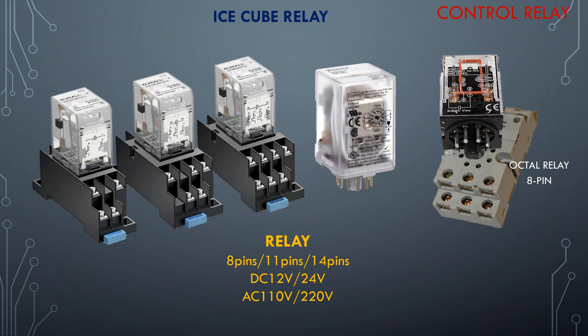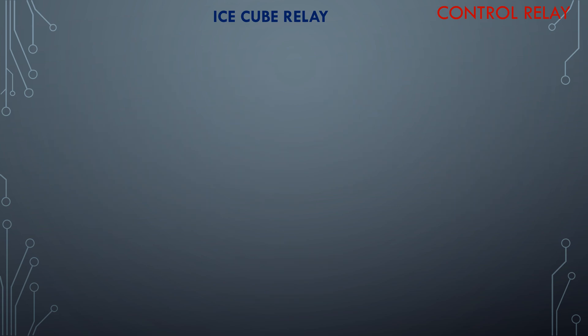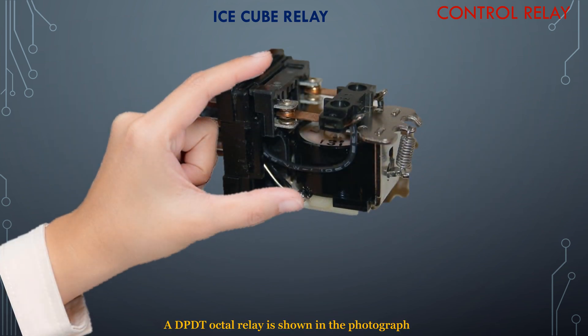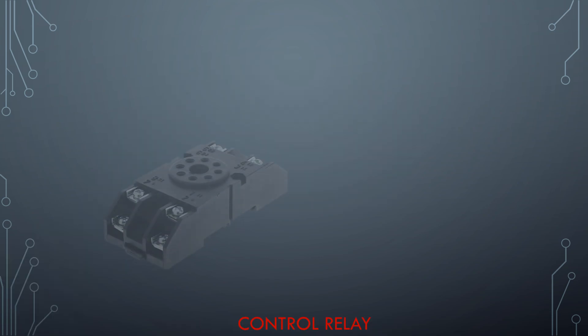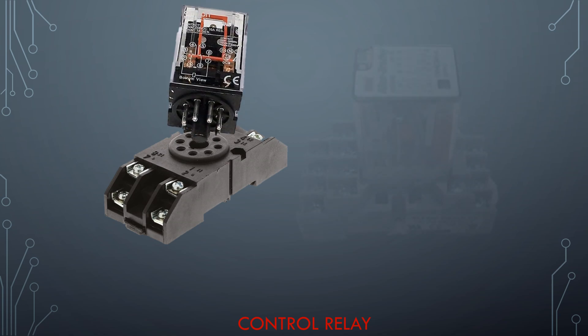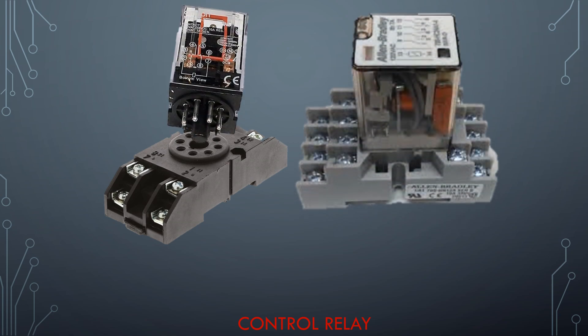Two common types of control relays are the so-called octal relay and the ice cube relay. These relays plug into multi-pin base sockets contained in clear plastic cases, allowing inspection of working elements. A DPDT octal relay is shown in the photograph. Please watch the pictures of ice cube relays with their configurations.